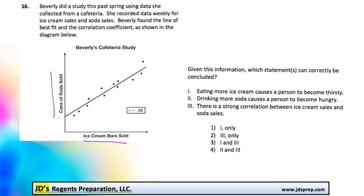Beverly found the line of best fit and the correlation coefficient, we can see it's 0.96, as shown in the diagram below. Given this information, which statement or statements can correctly be concluded?